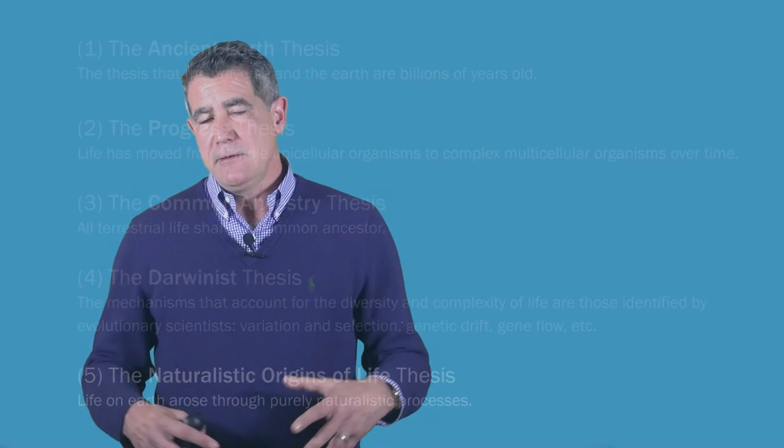So critics of the evolutionary scheme of origins take issue with one or in some cases with all of these theses. And these critics argue that the scientists have just misunderstood the data or mishandled it. Or perhaps that there's an agenda behind their interpretation of the data that lead them to endorse those five theses. And as a result, they've fallen into error.